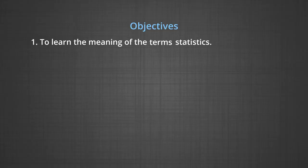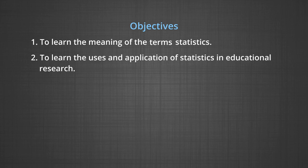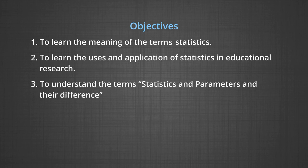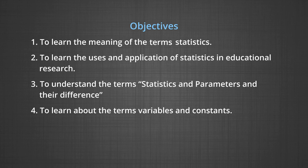The main objectives of this module are: number one, to learn the meanings of the term statistics; number two, to learn the uses and applications of statistics in educational research; three, to understand the term statistics and parameters and their difference; number four, to learn about the terms variables and constants.